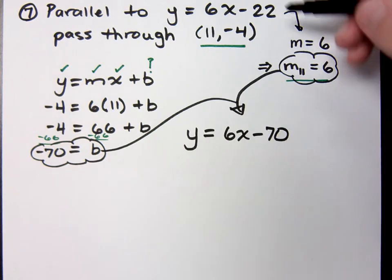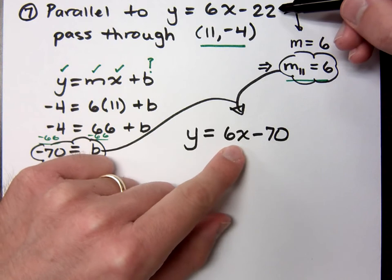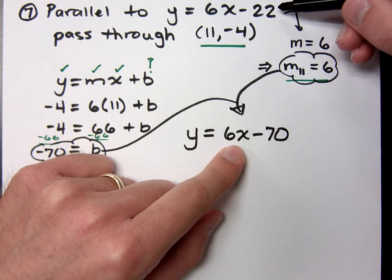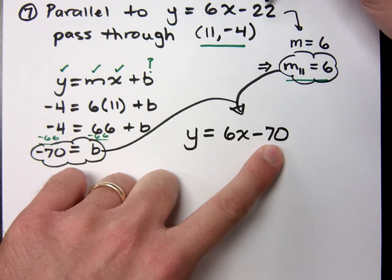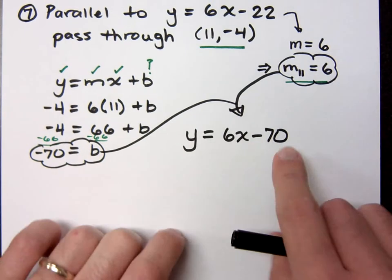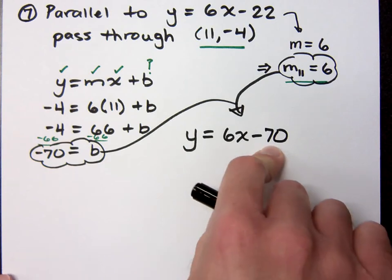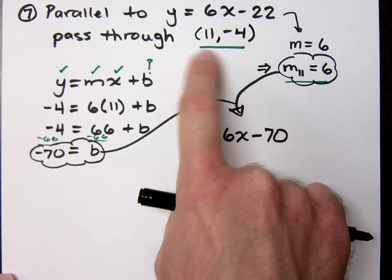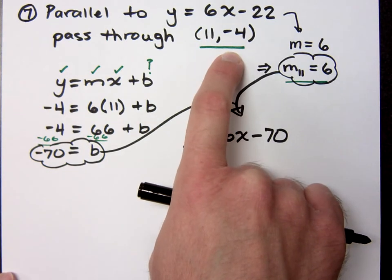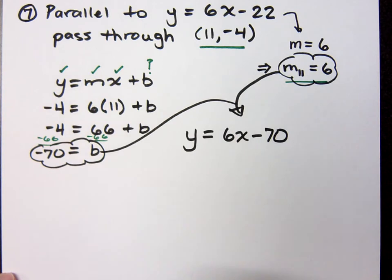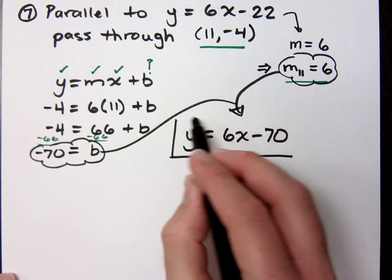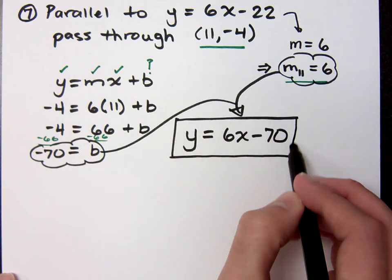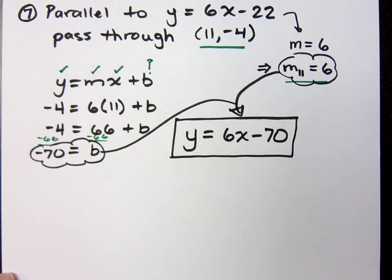Now, look at these two equations. Can you see that these guys are parallel? They have the same slope. Their y-intercepts are different. Now, how do we know that this was going to be the y-intercept for that line parallel to this one? Well, we used the point that we were going through. We knew we went through that point, and so that means we come up with the y-intercept, or the y-coordinate for the y-intercept of being negative 70. What do you guys think about that?